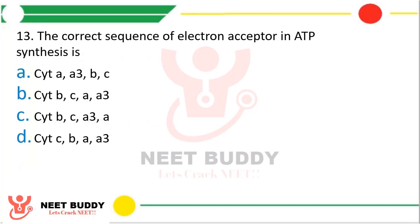Question 13: The correct sequence of electron acceptors in ATP synthesis is — option A cytochrome a, a3, b, c; option B cytochrome b, then c, then a, then a3; option C cytochrome c, b, a, a3. The correct answer is option B — the sequence is cytochrome b, followed by cytochrome c, then cytochrome a, then cytochrome a3.